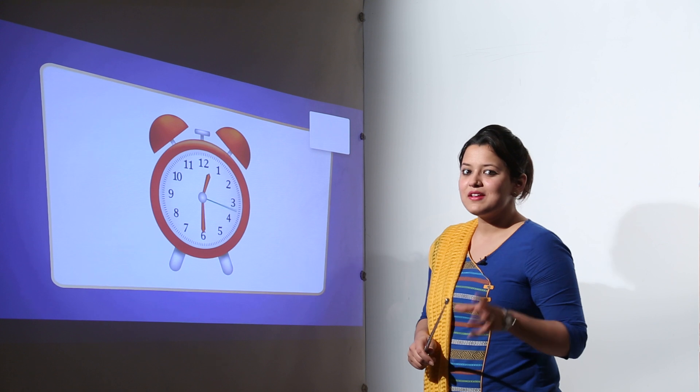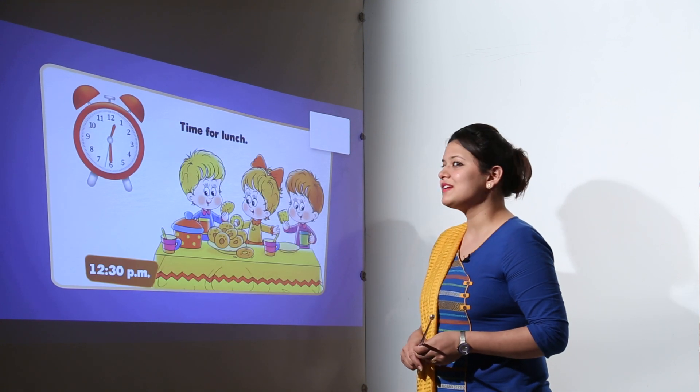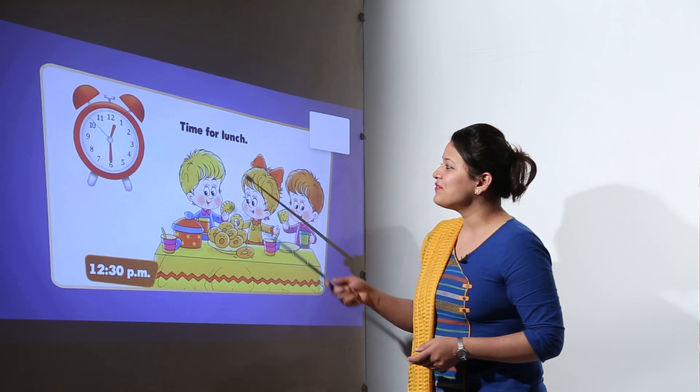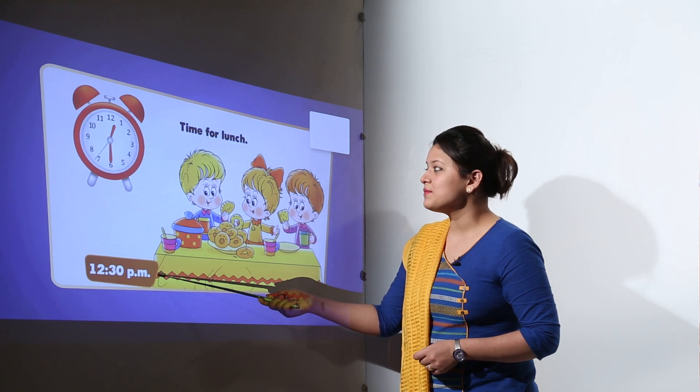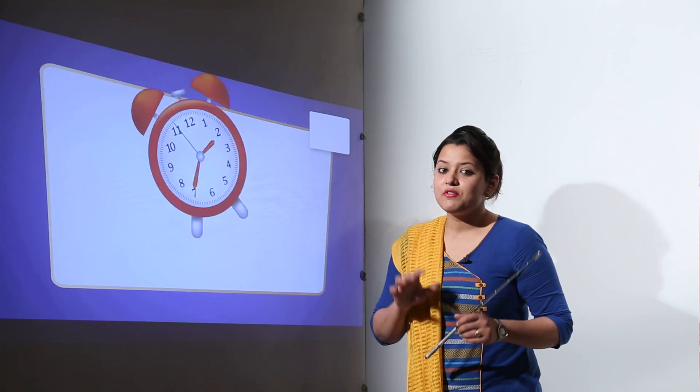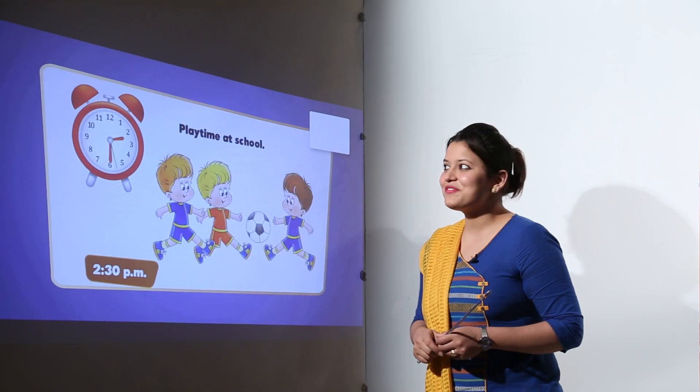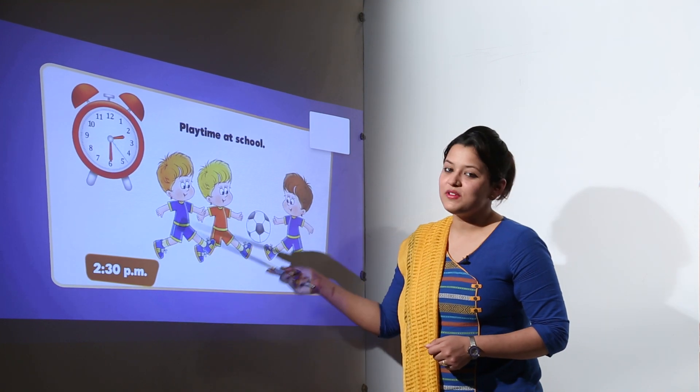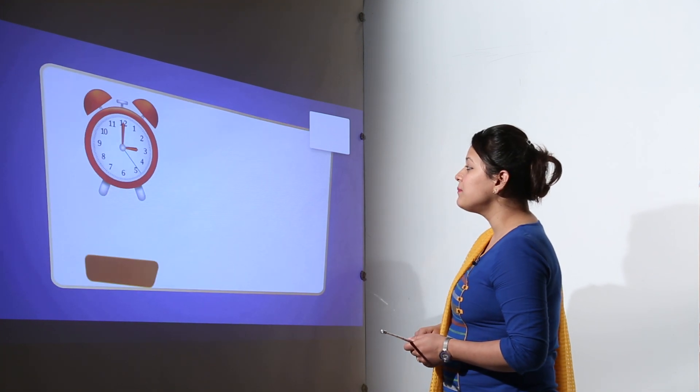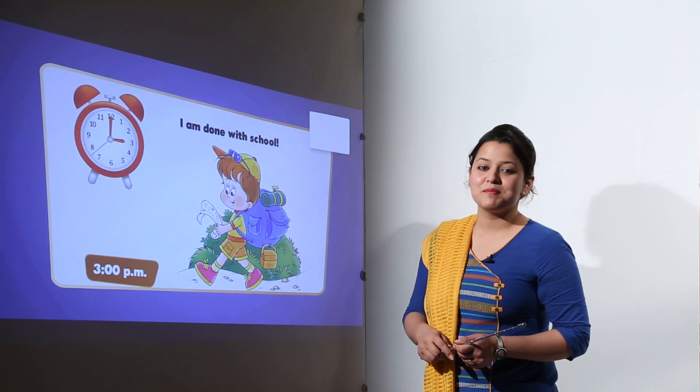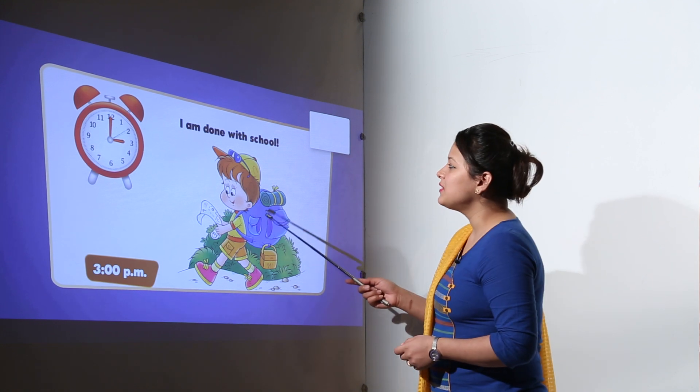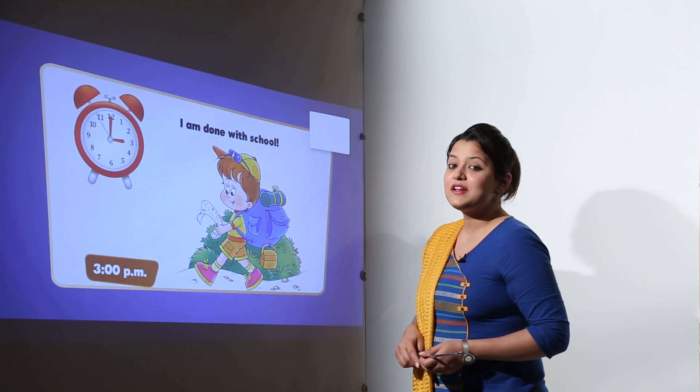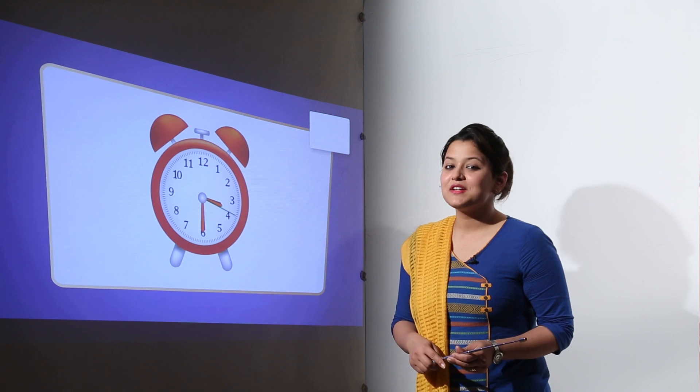Now the next is very interesting part, which is the time for lunch. And the time for lunch is at 12:30 p.m. After this, one very important part of a life is the playtime. So at 2:30 p.m., we have the playtime at school. Now at 3:00 p.m., it's time for us to get back to home. So at 3:00, we leave from school and we reach back home at 3:30.